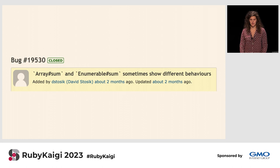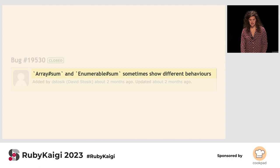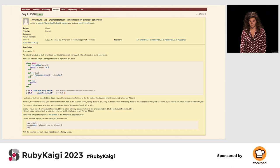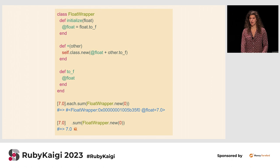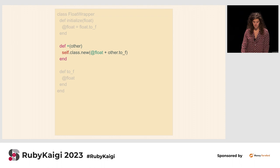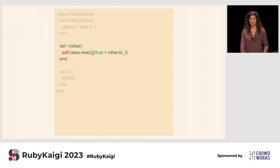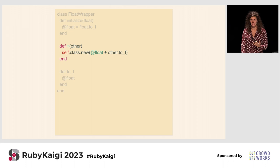Our first bug was filed by one of my co-workers at Shopify, David Stosek, who is also a Tokyo local. He said: array sum and enumerable sum sometimes show different behaviors. Any really thorough bug description has a minimal reproduction, which David included. He has this class which is a float wrapper, and the critical part is this plus method, which adds the float within the float wrapper to anything that implements `to_f`, and then wraps it in another float wrapper.